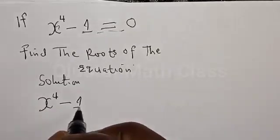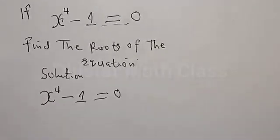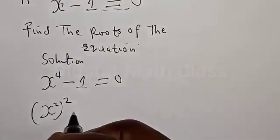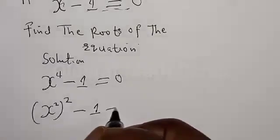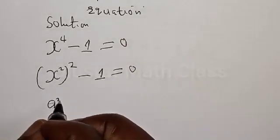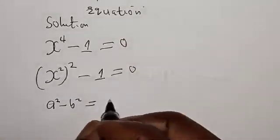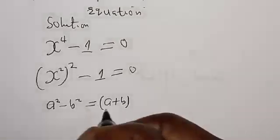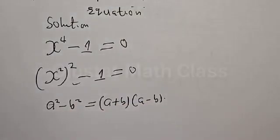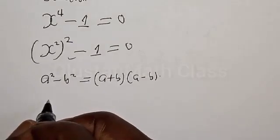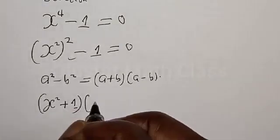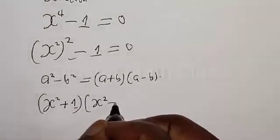Solution: we have the given equation s raised to power 4 minus 1 is equal to 0. This can be expressed as s squared, squared, minus 1 squared is equal to 0. Now remember: if you have a squared minus b squared, it is the same thing as a plus b into a minus b. This is the difference of two squares. We have s squared plus 1 multiplied by s squared minus 1.